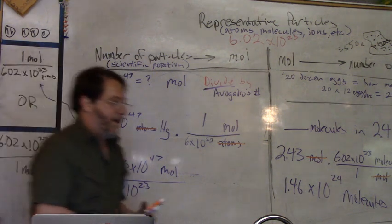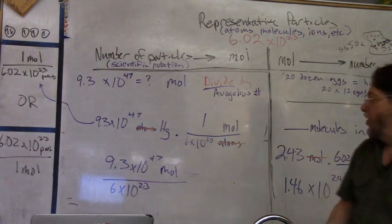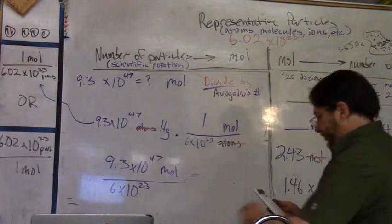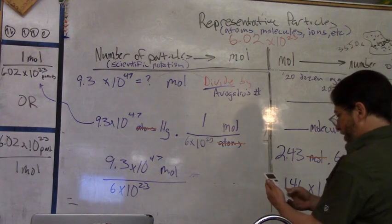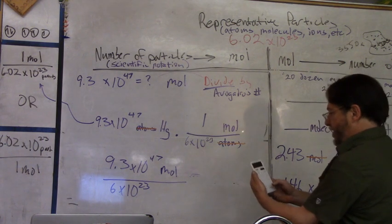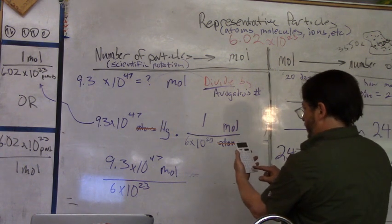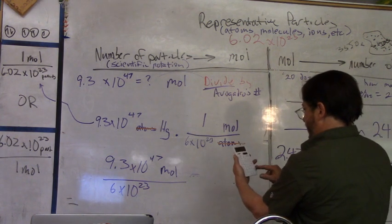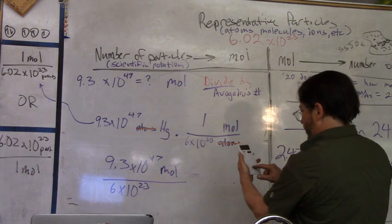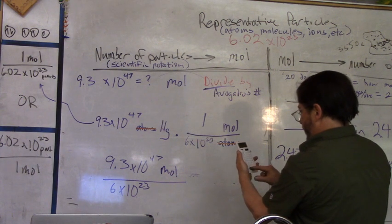So when I do that, remember: clear, 9.3, exponent, 47, divided by Avogadro's number, 6.02, exponent, 23rd.